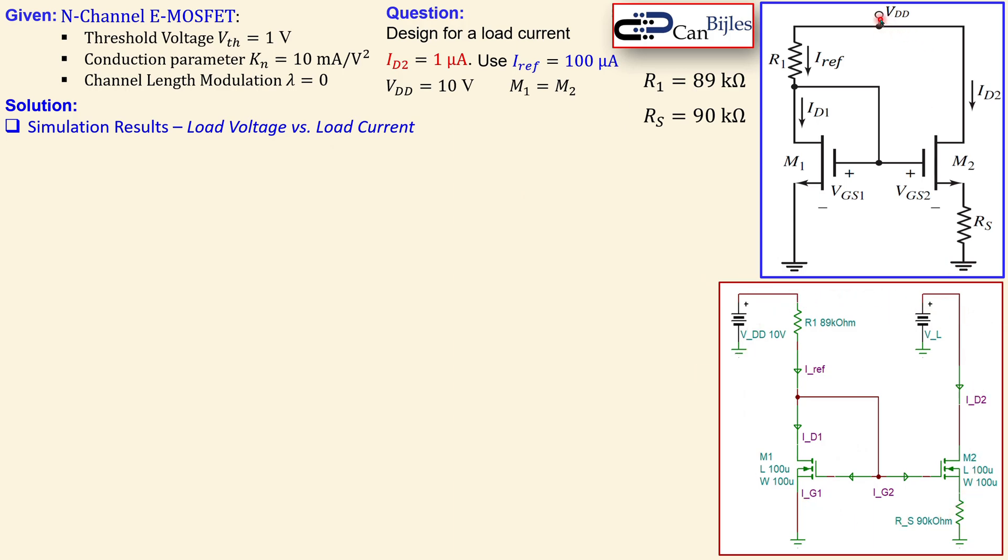You see we split actually this node. We will place it here and we will now sweep this value VL and then observe what the current here is. Remember, the length and width for both transistors are exactly the same again, because they are matched.